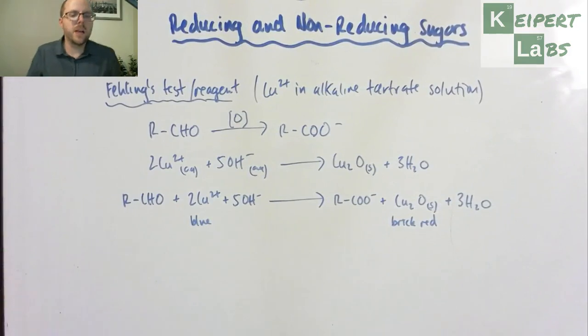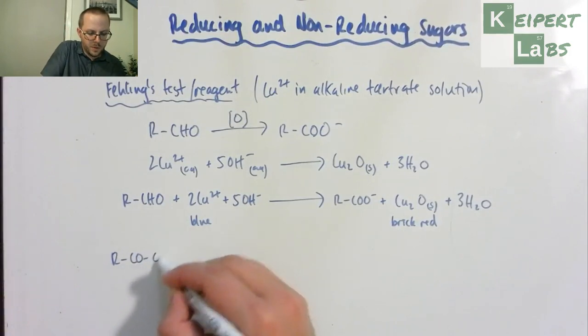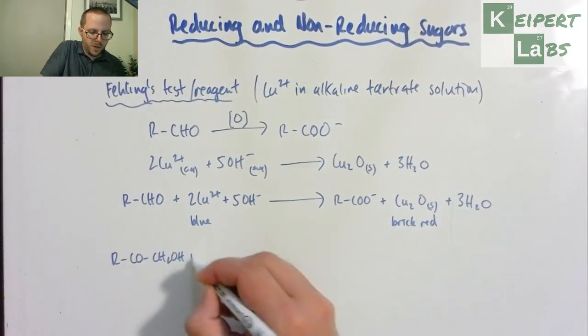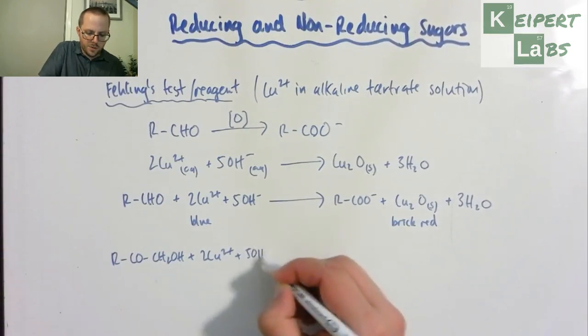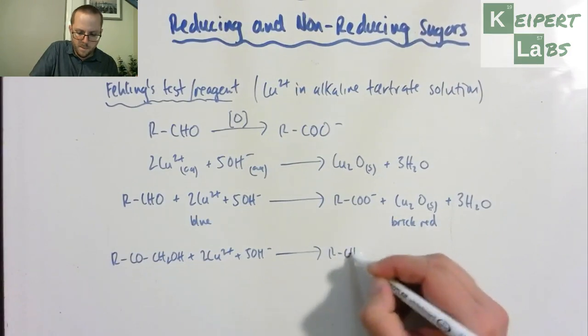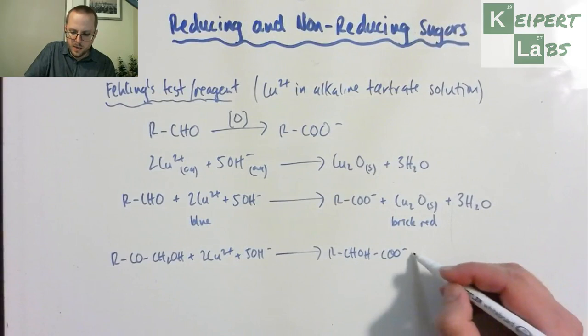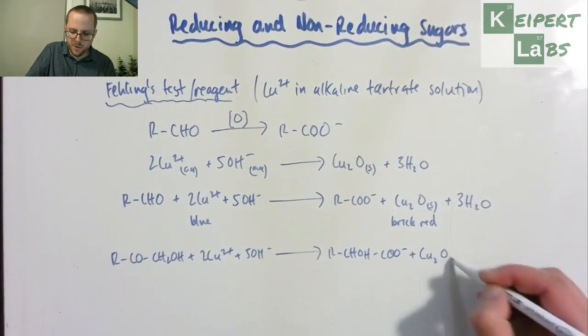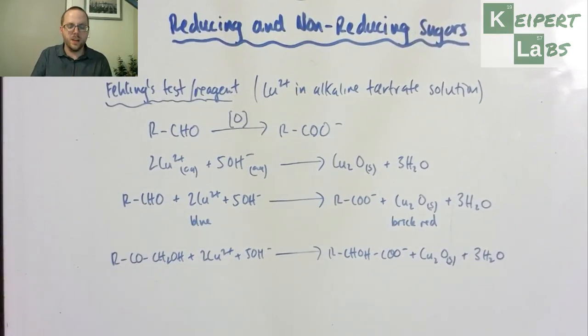Our sugar plus our copper plus our hydroxide ion goes to become the salt of our carboxylic acid plus our copper oxide plus three lots of water. We have blue and this goes to brick red. Now we see also this same sort of idea if we were to do with fructose. So I'll just do the combined one over here. The chemistry is very similar. The product that we get is slightly different, but not substantially. And the distinguishing presence of our copper one oxide is there as well. You can see.